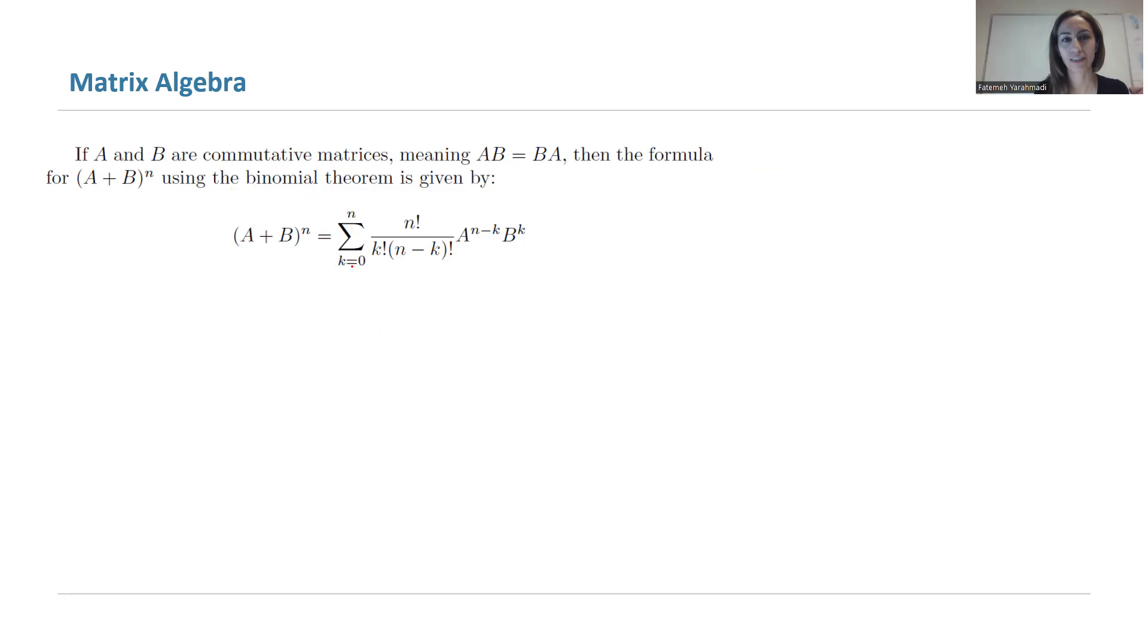This follows the summation of n choose k, which is n factorial divided by k factorial times (n minus k) factorial, times A to the power (n minus k) times B to the power k.